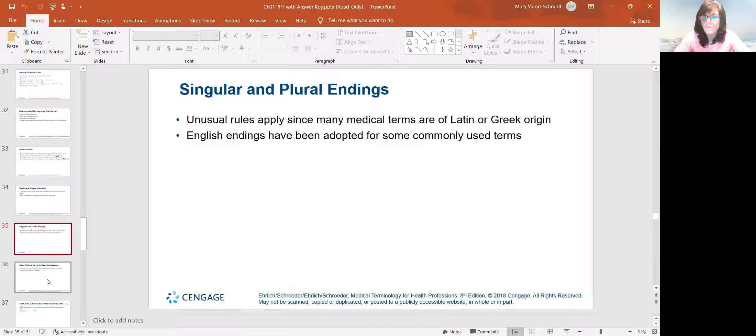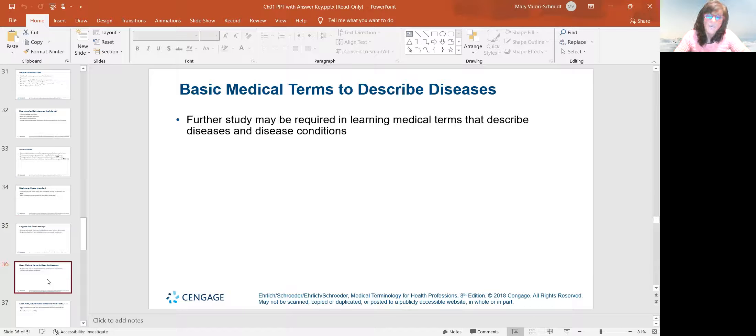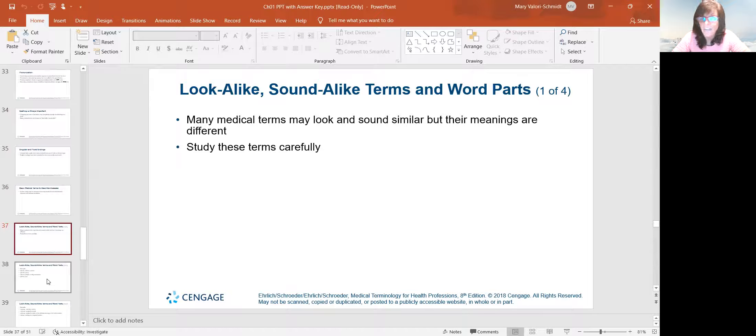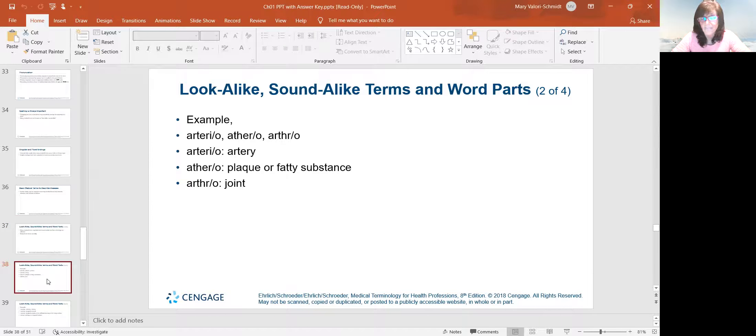And there are some weird rules with the medical terms because of the Greek or Latin origins. English endings are usually adopted for a lot of terms. I mean, all language comes from Latin originally. But sometimes you have to look things up a little bit more in depth to really understand them. So be careful with those look alike, sound alike words. Here's some examples they give you. There's arterio, athero, and arthro. So arterio is artery. Athero is plaque. Usually hypercholesterolemia causes plaque to build up inside the arteries. But arthro is pertaining to the joint. So they're very different, but they're pretty similar in the way they look. So be cognizant of that.